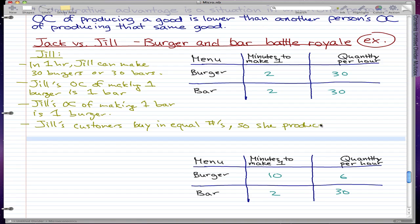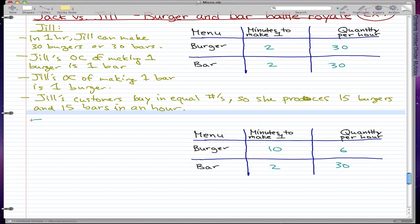So she produces 15 burgers and 15 bars, and that would be Jill's information. She produces 15 burgers and bars in an hour. Now that's Jill's information, now let's take a look at Jack, let's take a look at good old Jack.